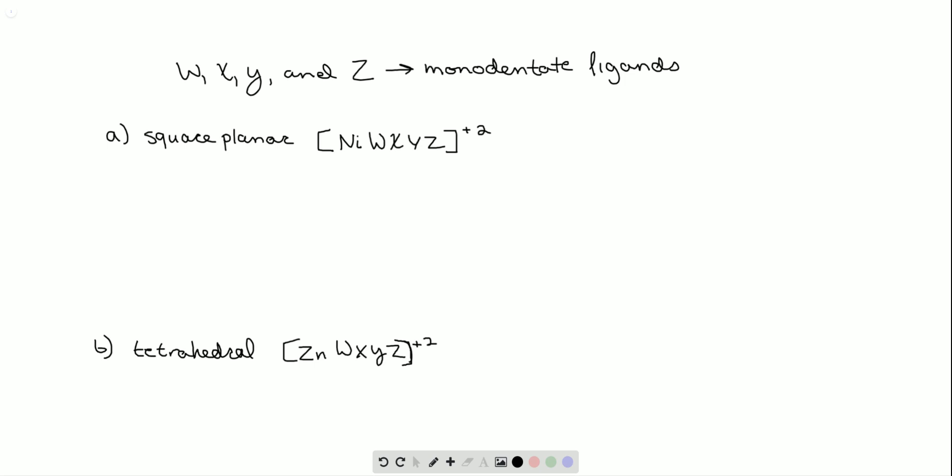All right. So in the square planar case, we have three different geometric isomers. And this has to do with the way that everything is arranged in space.